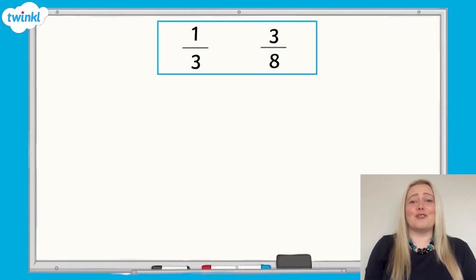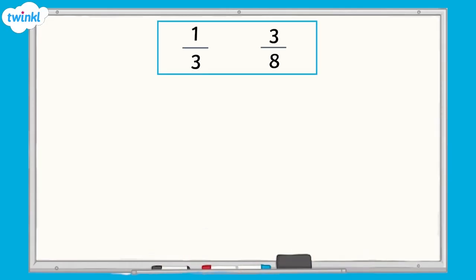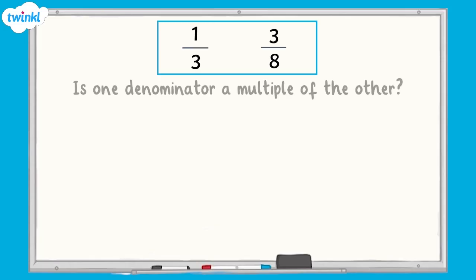Let's look at another example. Here we have another pair of fractions: 1 third and 3 eighths. Remember, when comparing a pair of fractions, we can ask the question: is one denominator a multiple of the other? In this case, the answer is no, because 8 is not a multiple of 3.